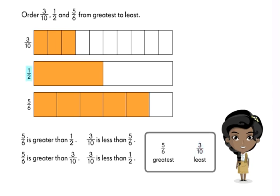1 half is less than 5 sixths and greater than 3 tenths. We write it here: 3 tenths is less than 1 half is less than 5 sixths.